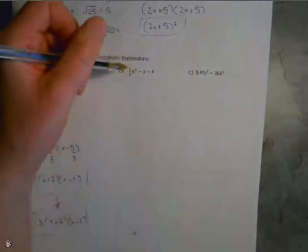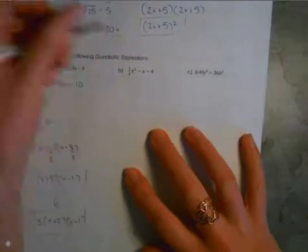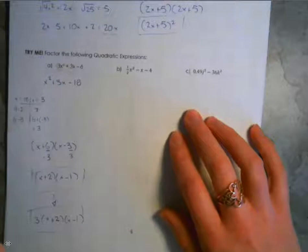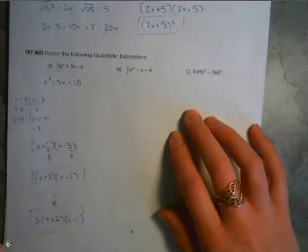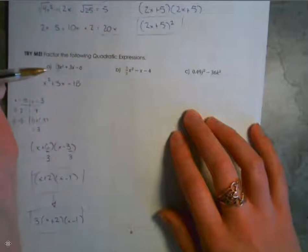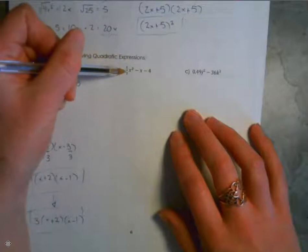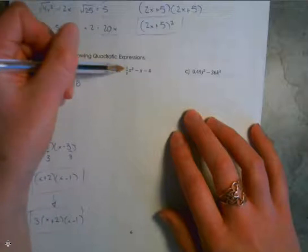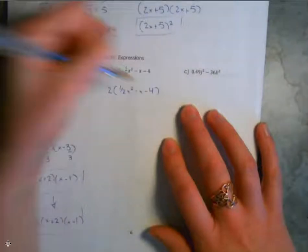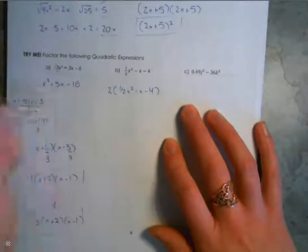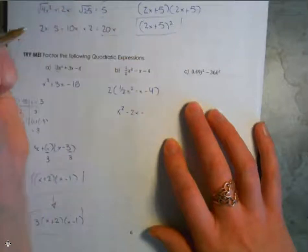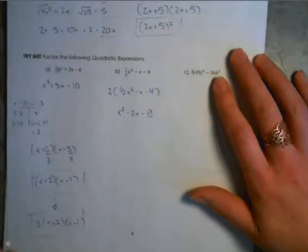For the next practice problem, there are always multiple methods, so if you got the right answer a different way, that's fine. What I like to do when there's a fraction in front of the x squared term is get rid of it. If it's one-half, I multiply by the denominator — 2 — to clear it. So multiplying the whole expression by 2: 2 times one-half is 1, leaving x squared; 2 times negative x gives negative 2x; 2 times negative 4 gives negative 8. Now I have a simple polynomial to factor.